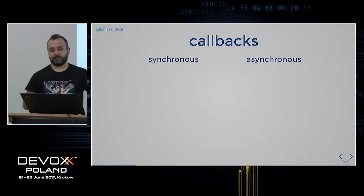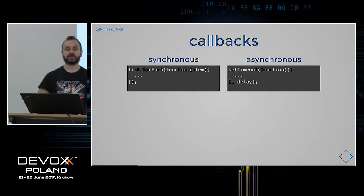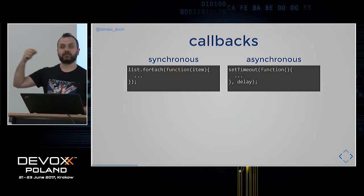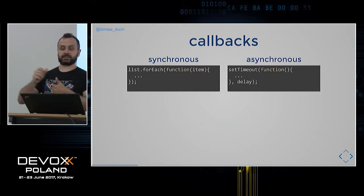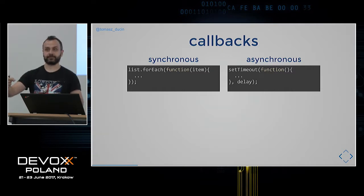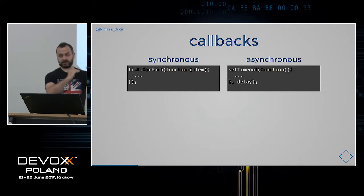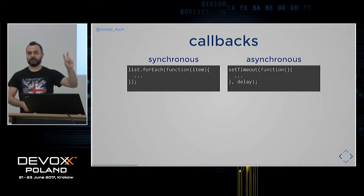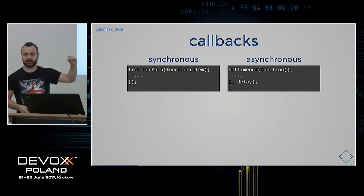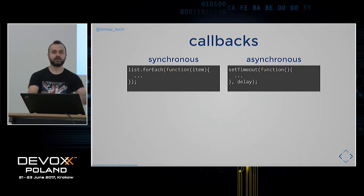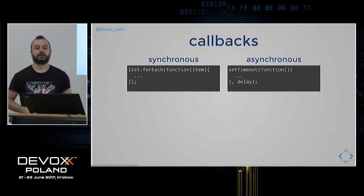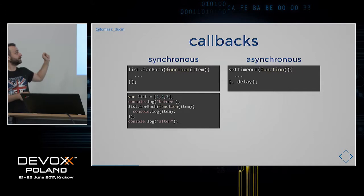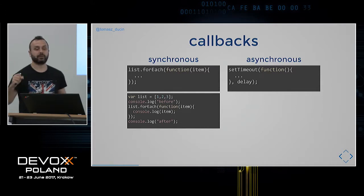We need to remember which callbacks execute synchronously and which asynchronously. Synchronous examples: forEach, map, filter, find, reduce and other functional high-order functions. Asynchronous examples: setTimeout, setInterval, Ajax callbacks. In asynchronous JavaScript there are always two things: we register now immediately, and the actual execution happens later. setTimeout itself is registered synchronously, but its callback runs asynchronously.